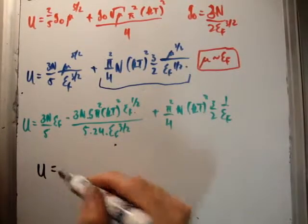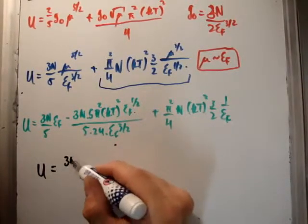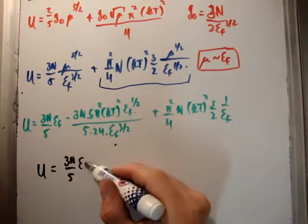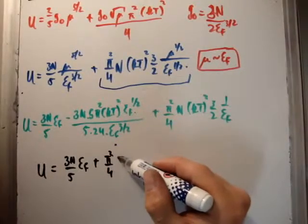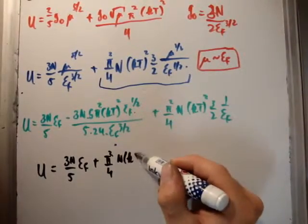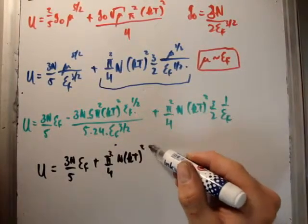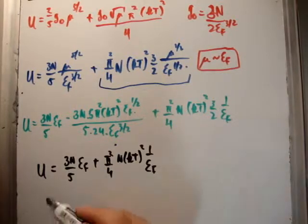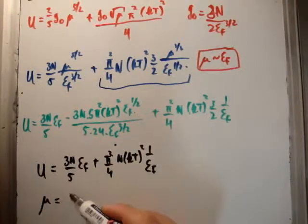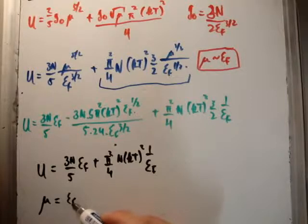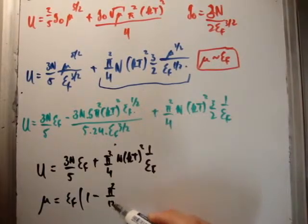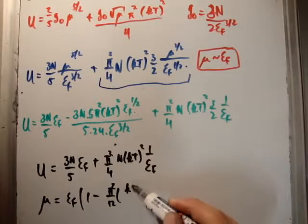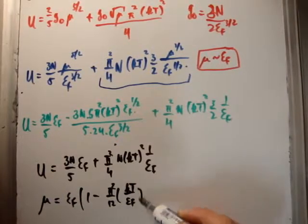U is equal to 3n over 5 times E Fermi plus pi squared over 4, n kT to be squared, 1 over E Fermi. And we know that we found that in a previous video, the chemical potential was the Fermi energy outside of 1 minus pi squared over 12, kT over E Fermi, all to be squared like that.